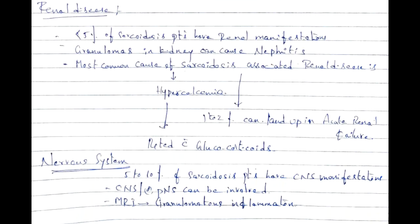Less than 5% of sarcoidosis patients have renal manifestations. Granulomas in the kidney can cause nephritis. The most common cause of sarcoidosis-associated renal disease is hypercalcemia, which can be treated with glucocorticoids. One to two percent can develop acute renal failure.